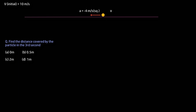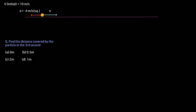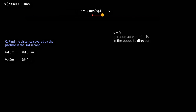Let us first draw a neat diagram of what exactly is happening. The particle is moving with a velocity of 10 meters per second in this direction, and the acceleration is acting in this direction at 4 meters per second squared — so we write it as minus 4. This acceleration is acting against the direction of motion, slowing down the particle, which means that at some point the particle's velocity will become 0, and it will start moving in the reverse direction.